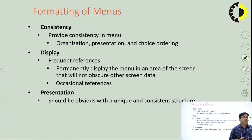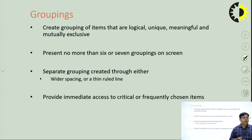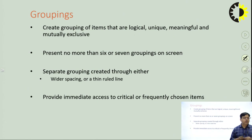Now, the formatting of menus. Menus must have consistency. Frequently referenced information should be displayed as a permanent display in the menu area, while occasional references should be shown on user demand. Presentation should be obvious with a unique and consistent structure — there should be no ambiguity in menus. For grouping menus, create groupings of items that are logical, unique, meaningful, and visually exclusive. Mutually exclusive menus should be grouped together to reduce visual clutter on the screen.